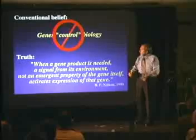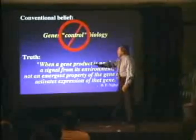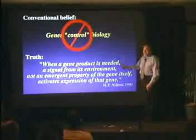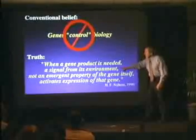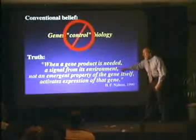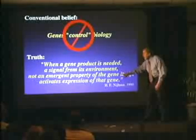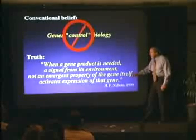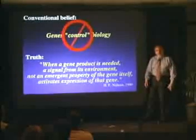Why would a gene be activated? To make the proteins for the cell that needs to do the behavior. The truth statement is this: when a gene product is needed, a signal from its environment — not an emergent property of the gene itself — activates expression of the gene.